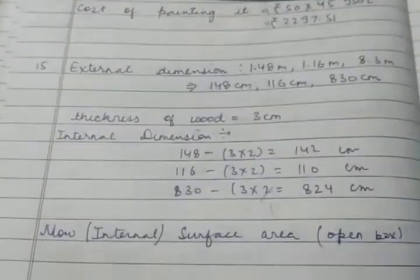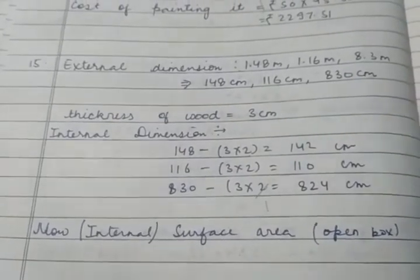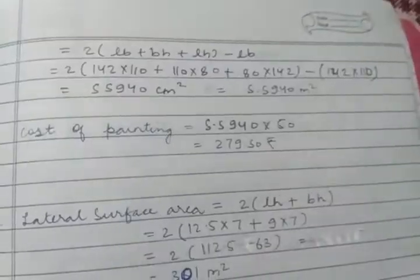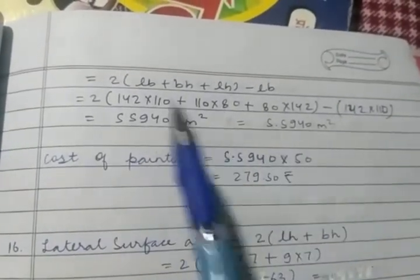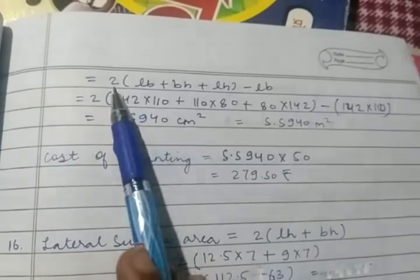So we have to get the internal dimension for the entire quantity. And the internal dimension, you have to get the internal dimension. Now we will find the internal surface area for the open box. Because the top is open, so we will not consider the upper surface.